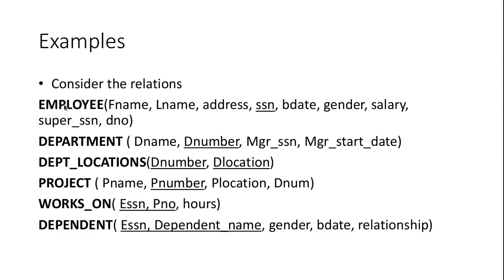We will see some examples using these relations: Employee, Department, DepartmentLocations, Project, WorksOn, and Dependent. Employee stores employee details — SSN is its primary key. Department stores department details — department number is the primary key. DepartmentLocation stores department number and department location, and both together form the primary key.